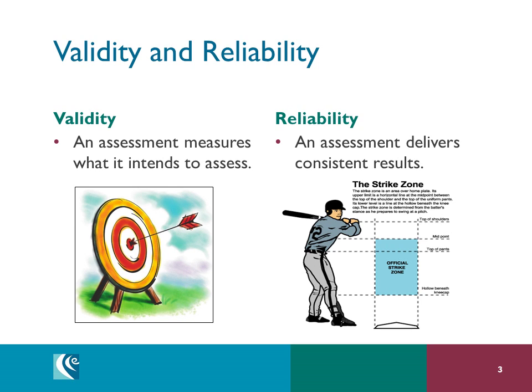In baseball, a strike should be so called regardless of the umpire, the batter, the location of the field, or the time of day. In the classroom, a competent score should be so called regardless of the teacher, the student, the city, or the time of year. Notice though that while the strike zone is considered universally consistent, it actually changes for each batter depending on their proportions. That mixture of consistent and flexible is a great metaphor for how we should be approaching our students.